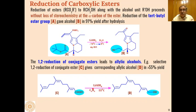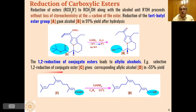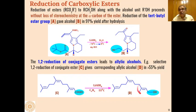When conjugated esters are reacted with LAH, allylic alcohols are obtained as the product by selective 1,2-reduction, because of the conjugation present.